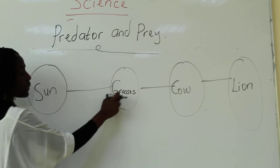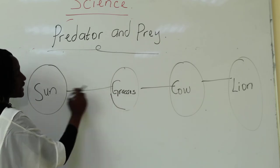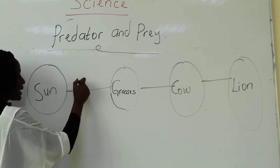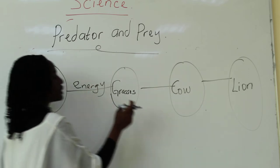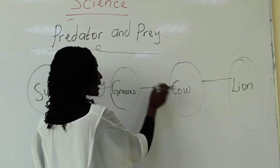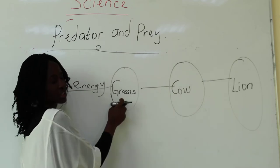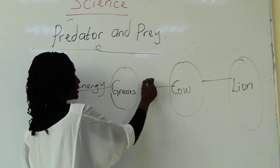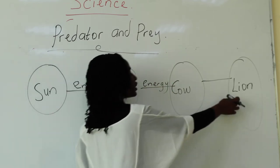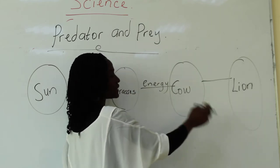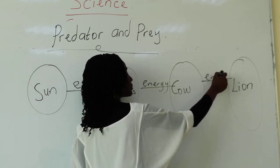Alright — grass gets its energy from the sun. Now, a cow gets energy from the grass because the cow eats grass. Then the lion eats other animals, so the lion gets its energy from the cow.